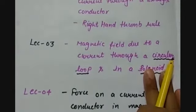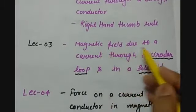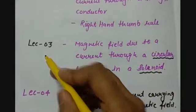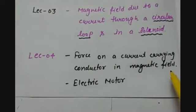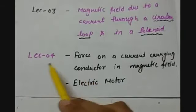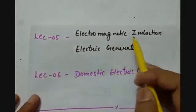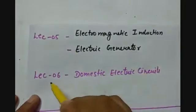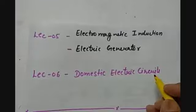In the third lecture we will do magnetic field due to a current through a circular loop and magnetic field due to a current in a solenoid. In lecture number 4 we will do the force on a current carrying conductor in a magnetic field and the working of an electric motor. In lecture number 5 we will study electromagnetic induction and the working of an electric generator. In lecture number 6 we will study about domestic electric circuits.